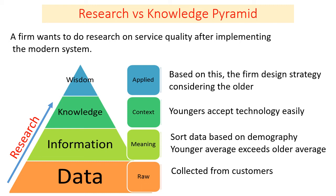The younger population accepts technology easily while the older population faces a problem. Based on this knowledge, the company designs a strategy to help the older population adopt the modern system — this is what we call wisdom. In short, research converts data to knowledge. When we design a strategy to solve a problem investigated with research, it becomes wisdom. This is all about the relationship between research and the knowledge pyramid.